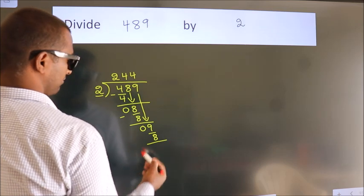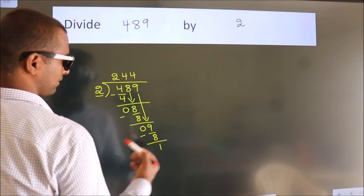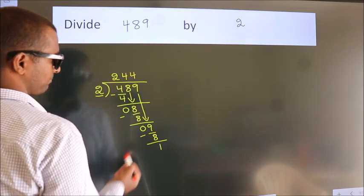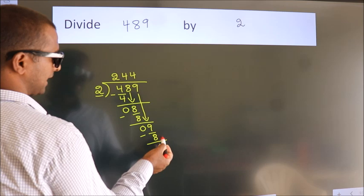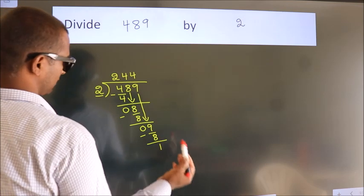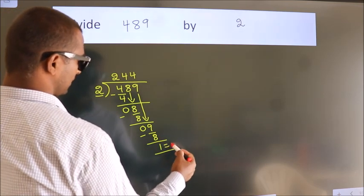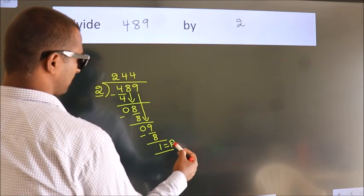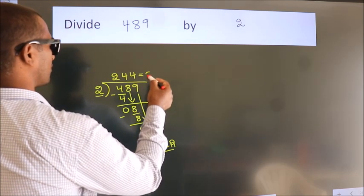Now we subtract and get 1. There are no more numbers to bring down, so we stop here. This 1 is our remainder, and the number on top is our quotient.